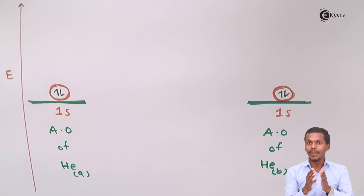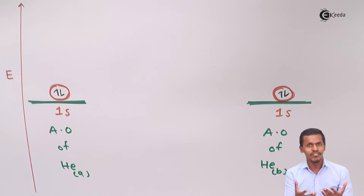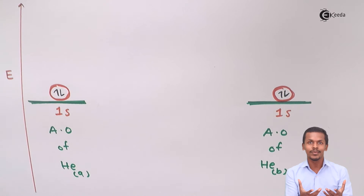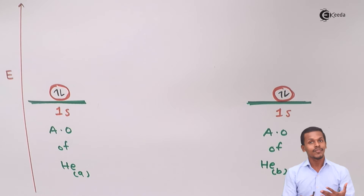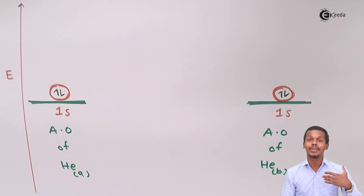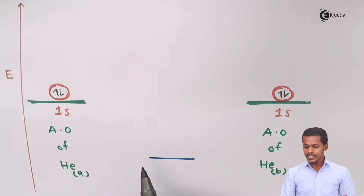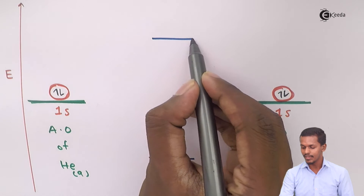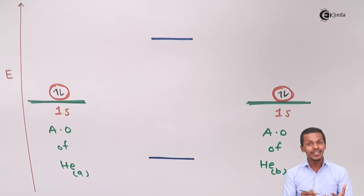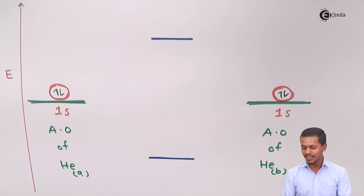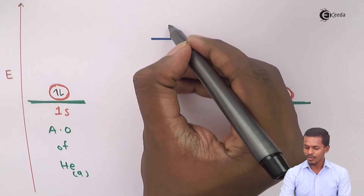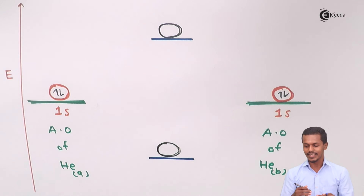Whenever these two atomic orbitals combine with each other, they will form molecular orbitals. How many molecular orbitals will be formed? Because the total number of atomic orbitals combining is two, two molecular orbitals will be formed. These two molecular orbitals will have different energy levels — one at a lower energy level and one at a higher energy level.